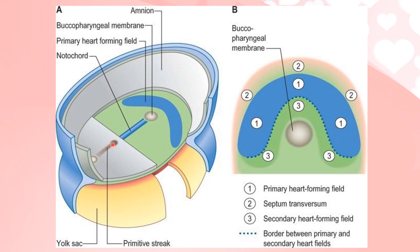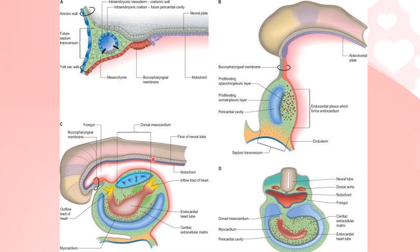In this section you can see the primitive streak and primitive node, the cut edge of the amnion, the notochord, the buccopharyngeal membrane, and the primary heart field. The cardiogenic area and the coelomic cavity present here will form the pericardial cavity. You can also understand the relationship of the pericardial area to the buccopharyngeal membrane.